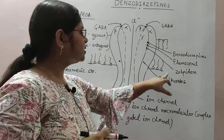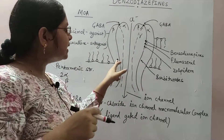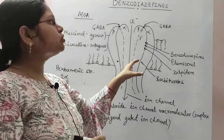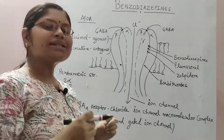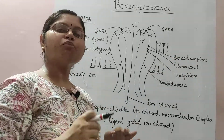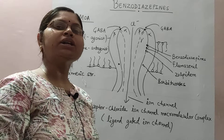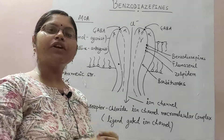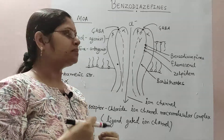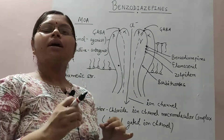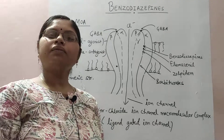For barbiturates, the binding site is present between the alpha and beta subunits. There are two alpha and two beta subunits, so there are two binding sites for barbiturates. Barbiturates also increase chloride ion channel opening, resulting in hyperpolarization and muscle relaxation. The key difference is that barbiturates at higher doses give a GABA mimic action — they no longer require GABA and can independently prolong chloride ion channel opening, affecting the respiratory system and CVS functions. Benzodiazepines do not have GABA mimic action, giving them a greater therapeutic index and making them safer drugs.